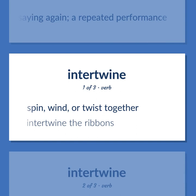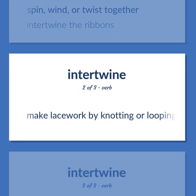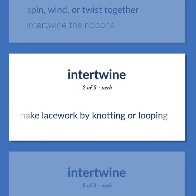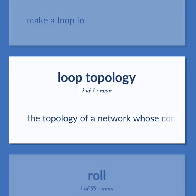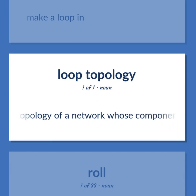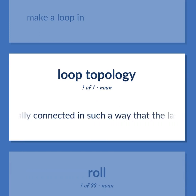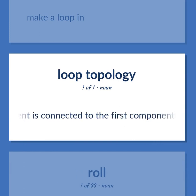Spin, wind, or twist together — intertwine the ribbons. Make lacework by knotting or looping. Make a loop in. The topology of a network whose components are serially connected such that the last component is connected to the first component.